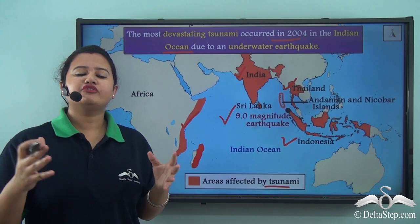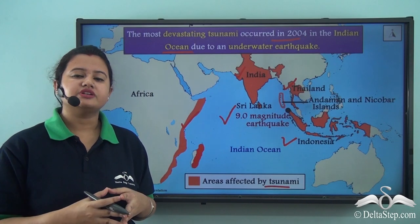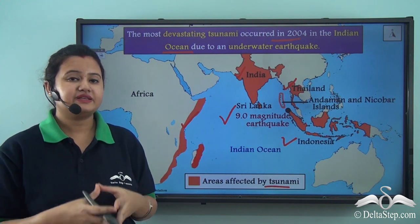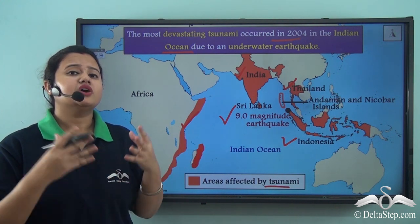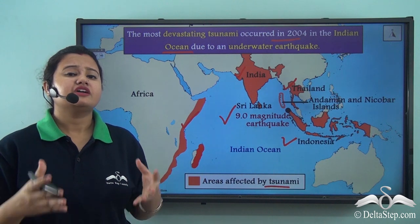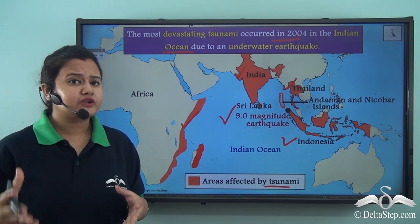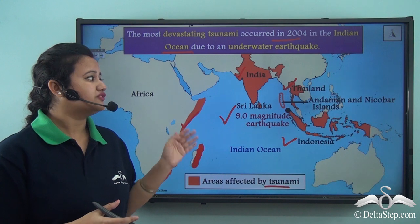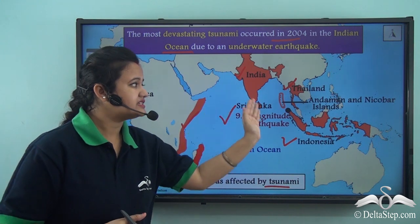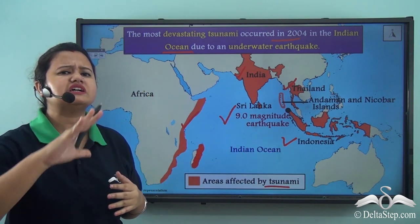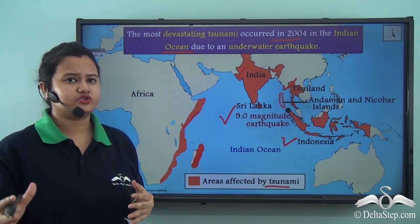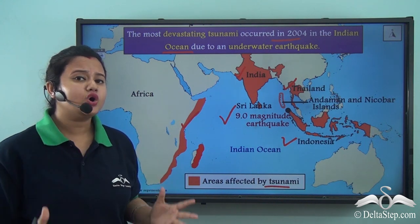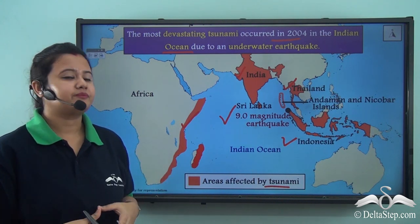Apart from native citizens, tourists who had visited these places also went missing. Hotels, tourist resorts, croplands, farmlands, and other structures present in these coastal regions were completely destroyed, and this tsunami also led to long-term environmental damage.